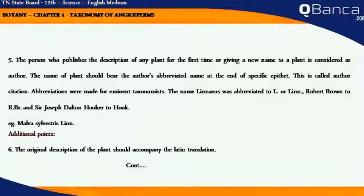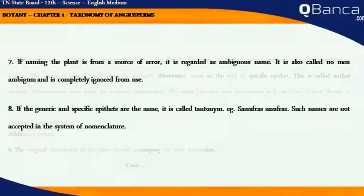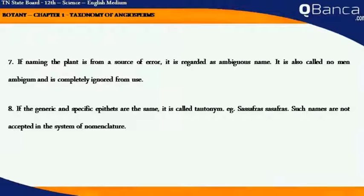Example: Malva sylvestris Linn. The original description of the plant should be accompanied by a Latin translation. If the naming of a plant is from a source of error, it is regarded as an ambiguous name, also called Nomen Ambiguum, and is completely ignored from use.